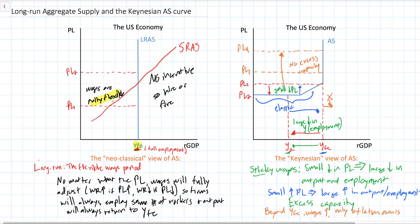If prices rise in the economy, wages will adjust immediately and firms will not be able to hire more workers because they'd have to pay so much more for them. Therefore, they continue to produce the same amount and employ the same number of workers.